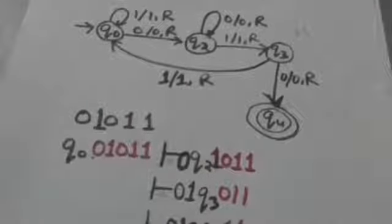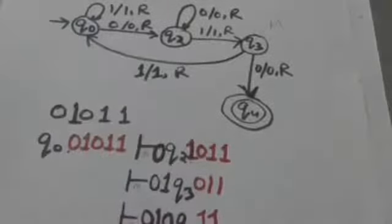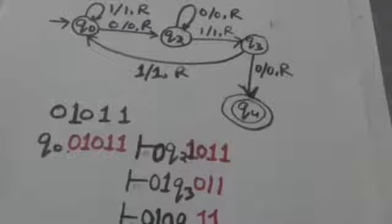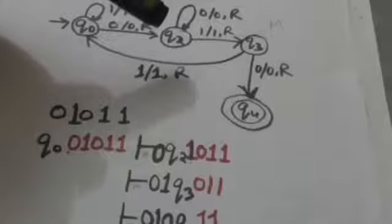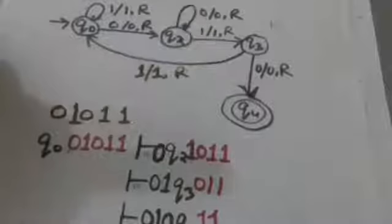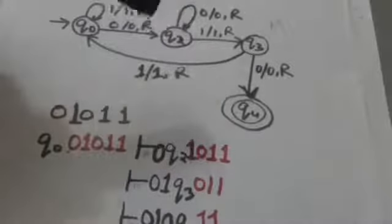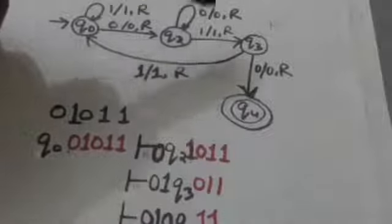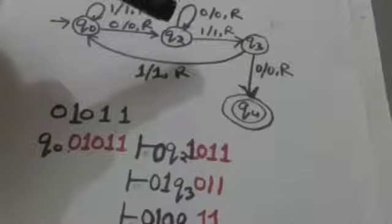After reading symbol 0, Turing machine M comes into this new configuration. Now it has to read the symbol 1. When the Turing machine M is in state Q2 and it reads the symbol 1, it jumps to state Q3, replaces the symbol 1 by tape symbol 1, and moves its head one position to the right.